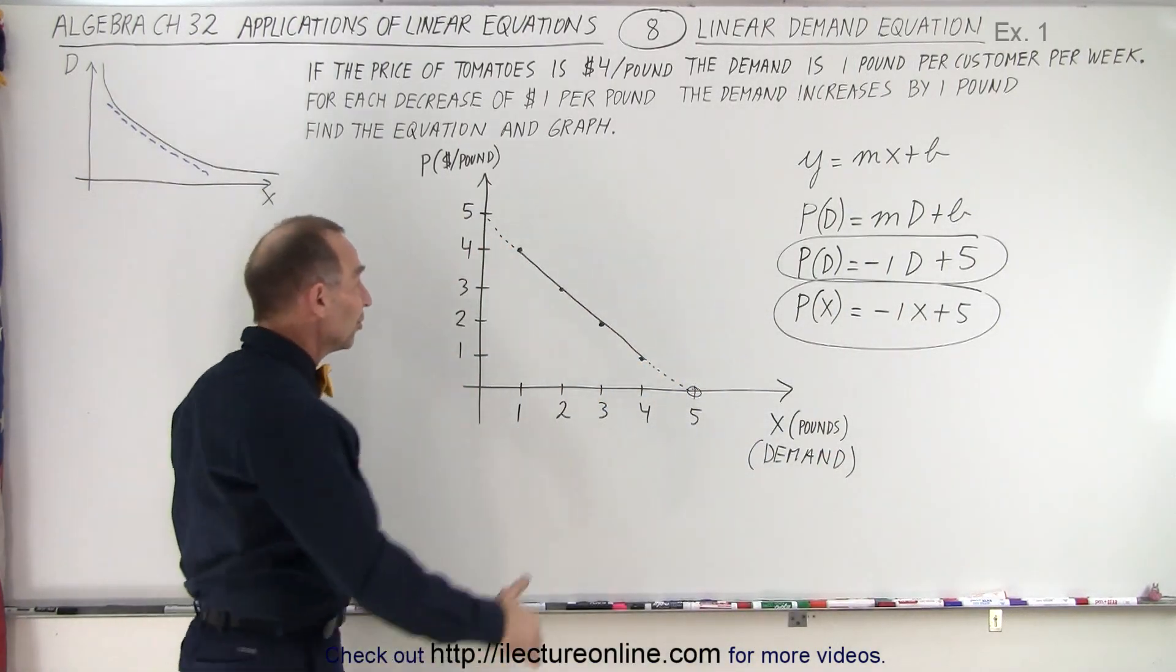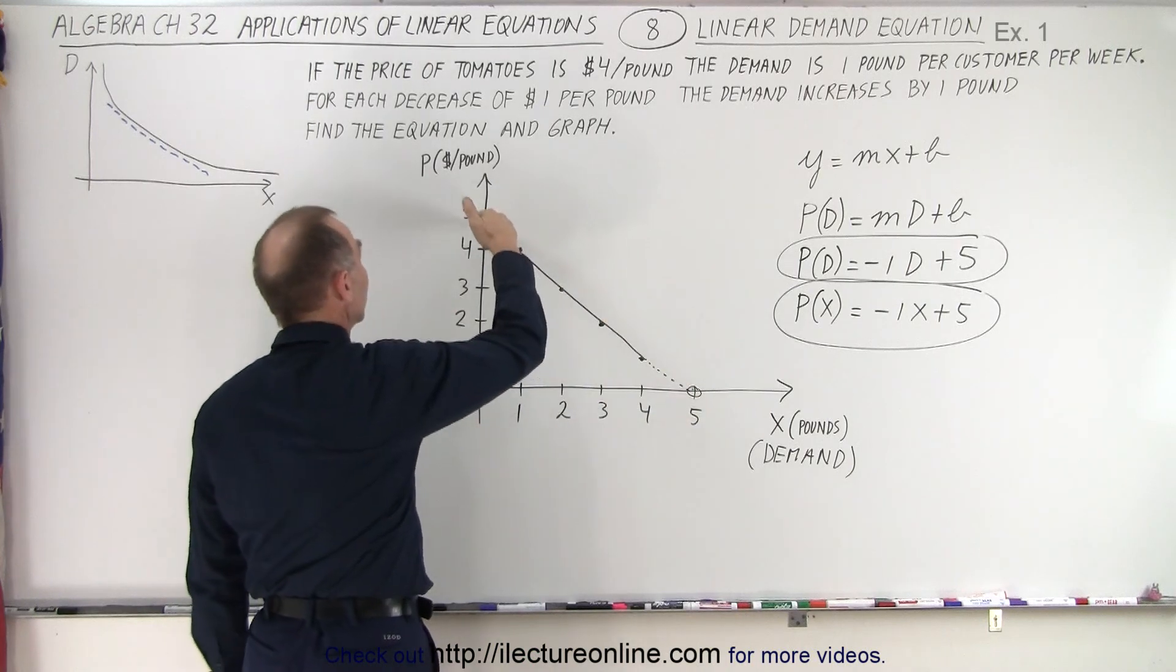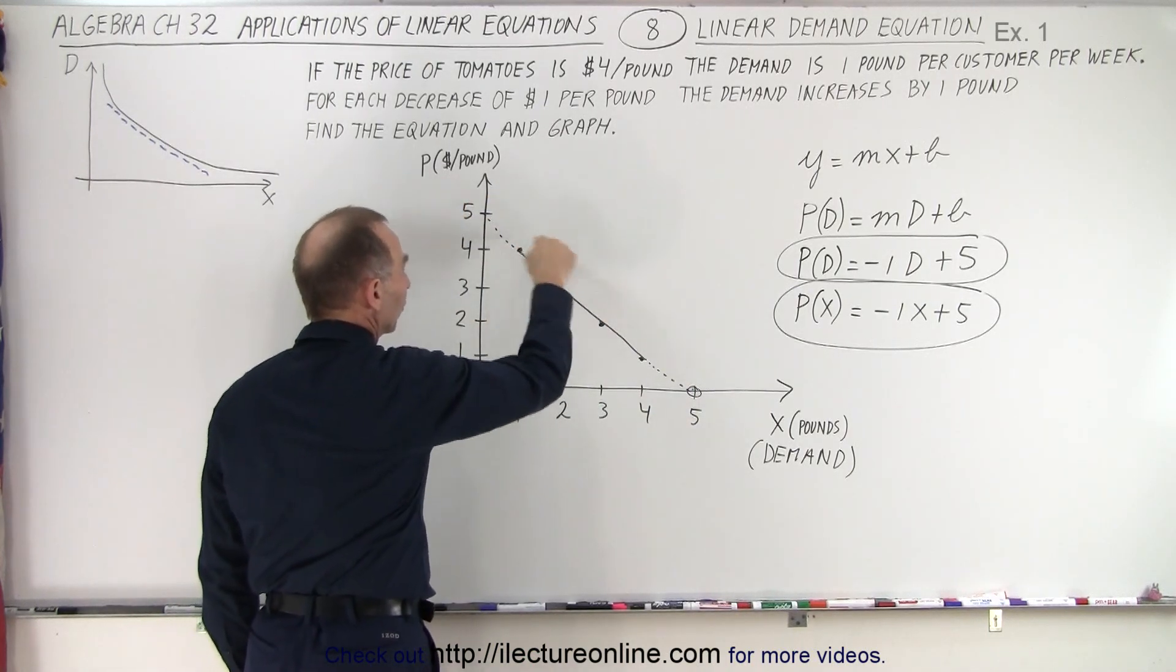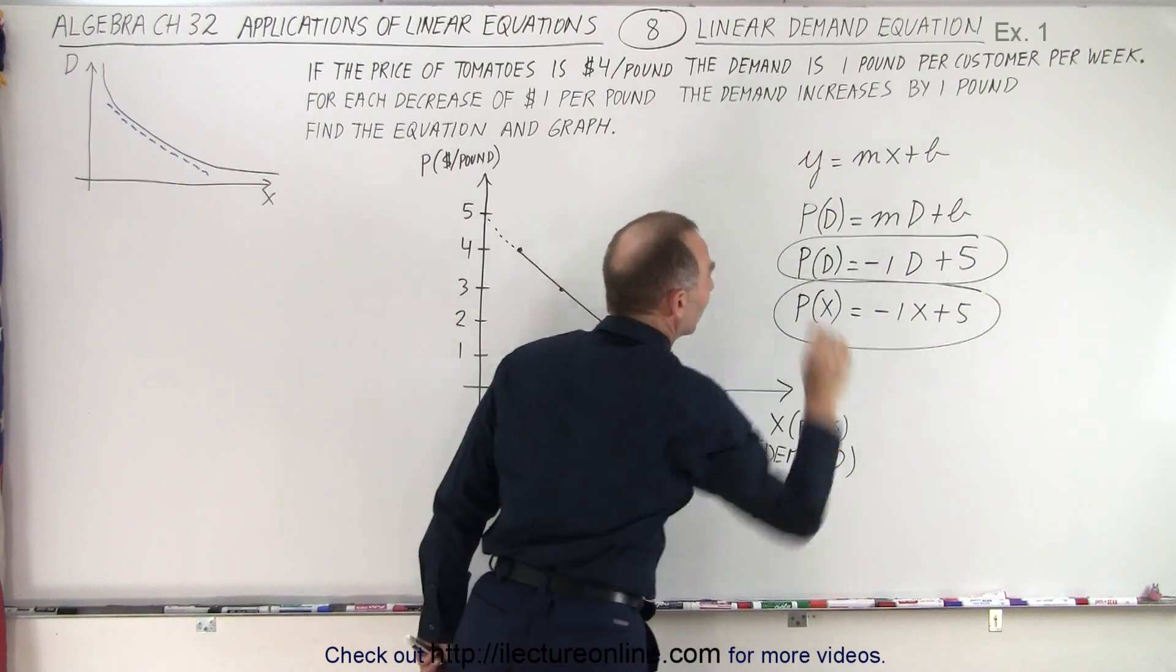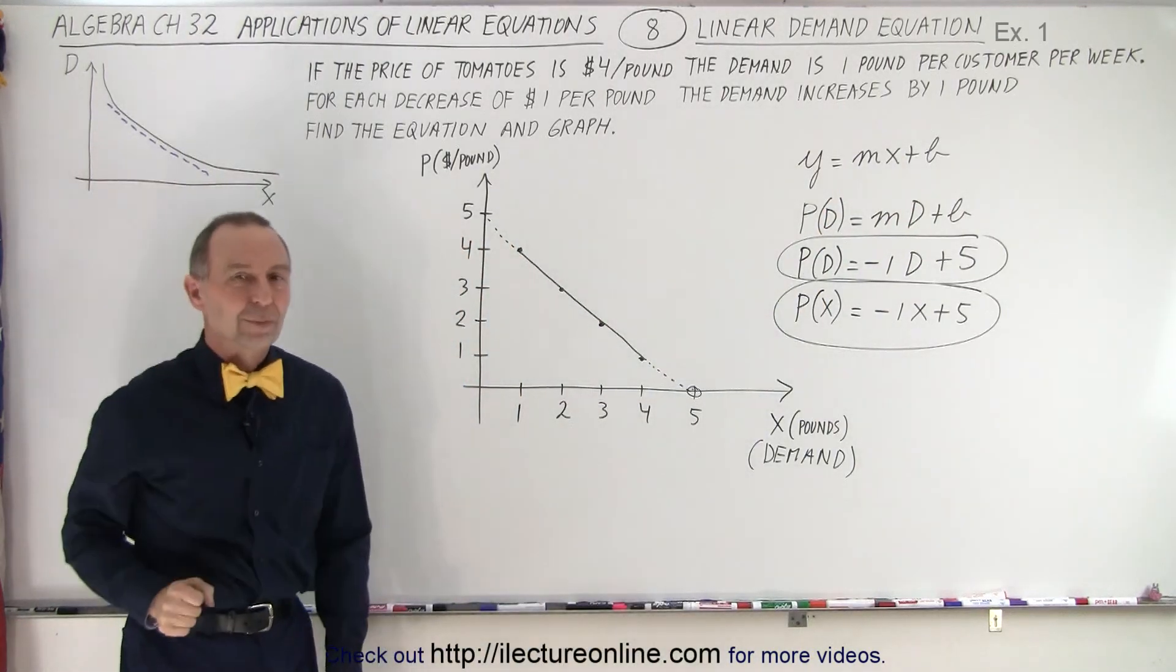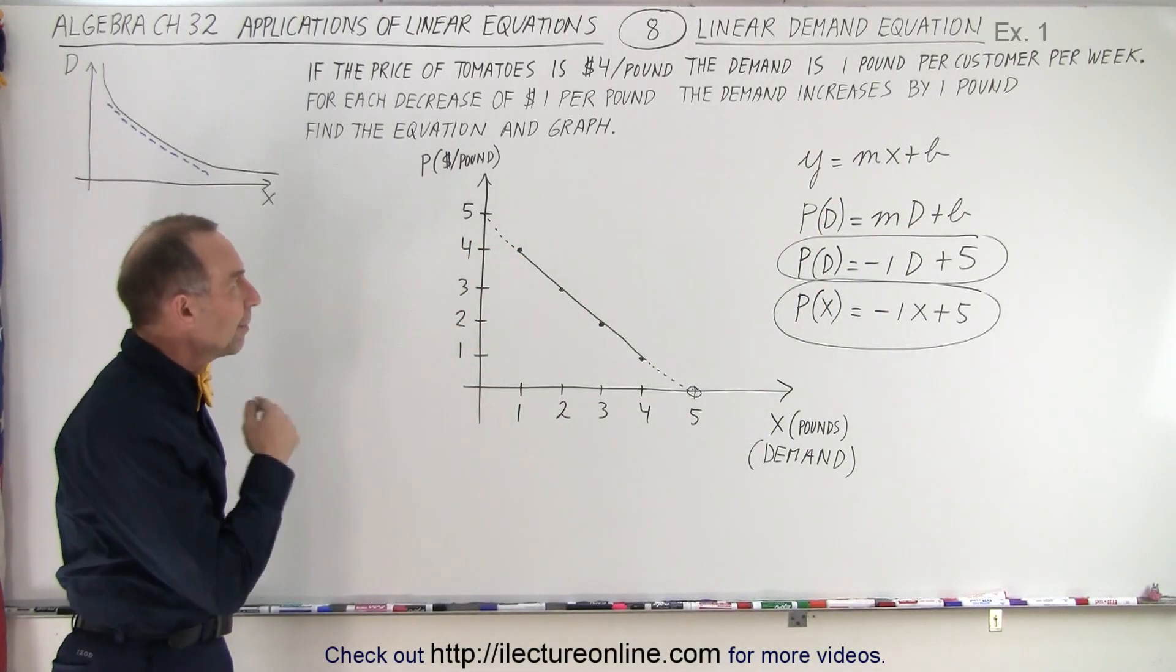But again, to find the equation, we simply continue with the line all the way until we have the intercept. We figure out the slope. We then compare it to our y equals mx plus b equation. And there comes your equation representing the demand equation.